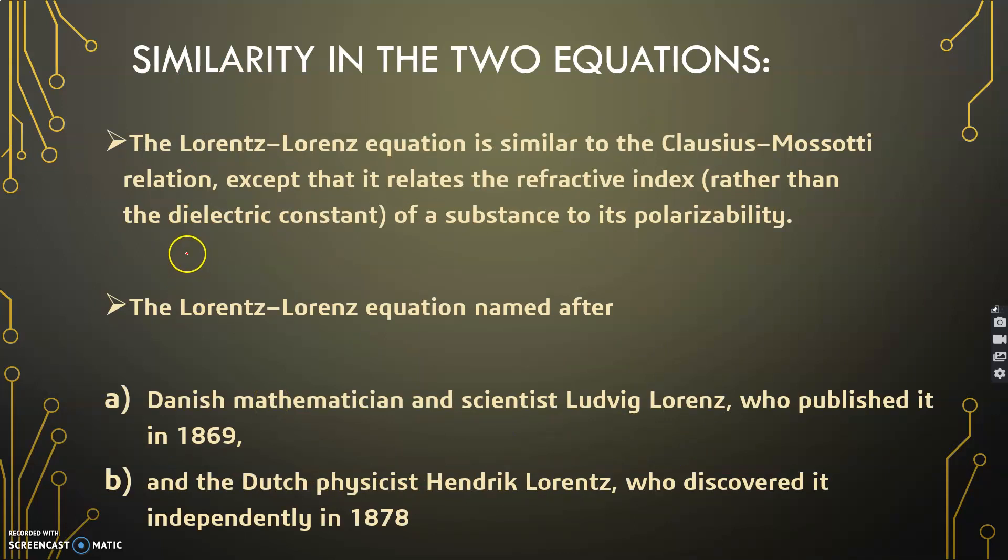What is the similarity in the two equations? The similarity is that both of them are very similar, but the Lorentz-Lorenz equation relates refractive index rather than dielectric constant to polarizability. This equation was named after the Danish mathematician Ludwig Lorentz and Dutch physicist Hendrik Lorentz who discovered this property independently.